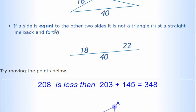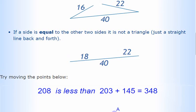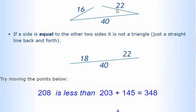If a side is exactly equal to the other two sides, so say you got a 40 here, and say this is a 22 and that's an 18. Well, 18 and 22 makes 40, so you just have a flat roadkill triangle.